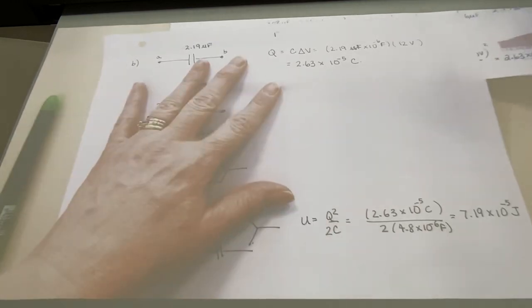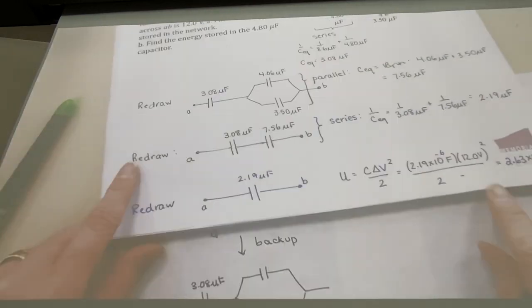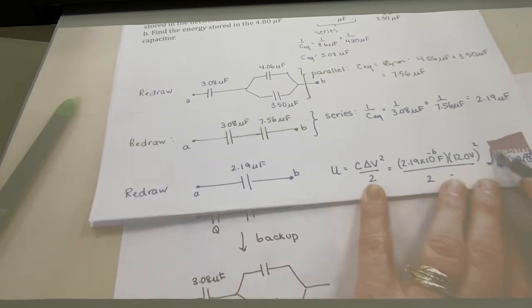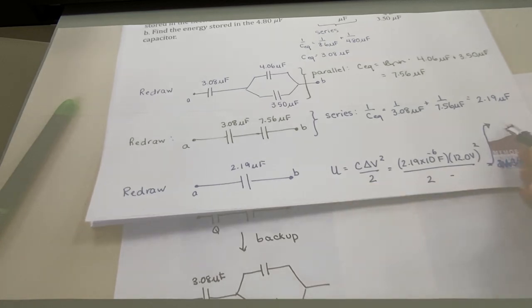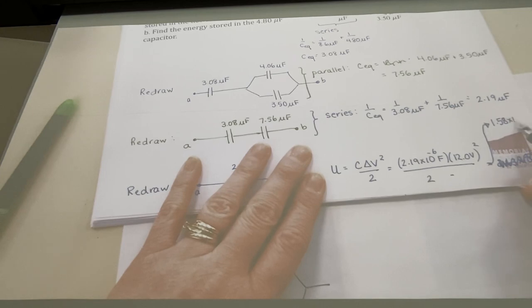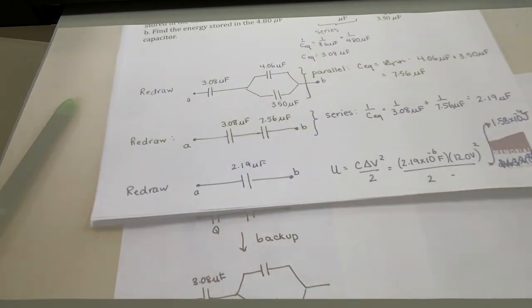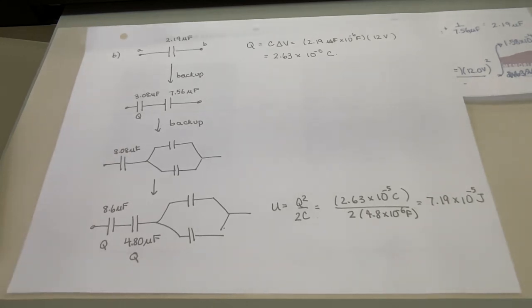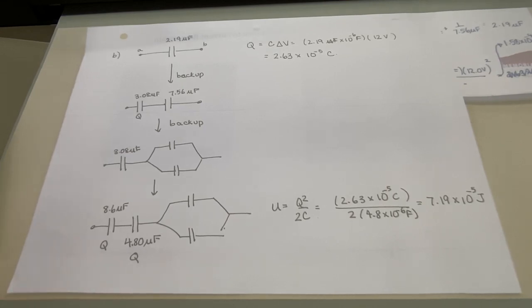I just noticed an error in my notes — in part A where I wrote down the energy, I wrote down the charge instead. The correct answer is 1.58 times 10 to the minus 4 joules. Sorry — it's important to fix mistakes when you catch them. We're going to skip the Geiger counter example, so that's the last thing for this chapter. Any questions about capacitors and energy before we move on to Chapter 25?